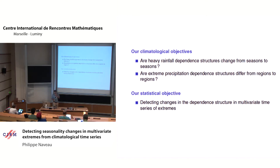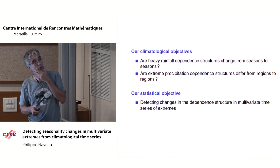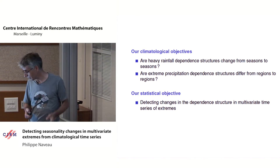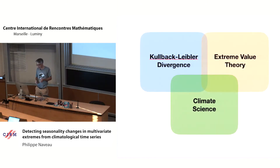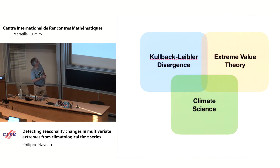In some sense, I'm not trying to fit a specific parametric model to describe the dependence. I would like something which is non-parametric. The point is: how can I measure the dependence in a multivariate time series of extremes? I'm going to look at three different things during this talk: the Kullback–Leibler divergence, a kind of entropy; I'm going to couple that with extreme value theory; and I'm going to apply that to the climate data motivation I gave at the beginning.